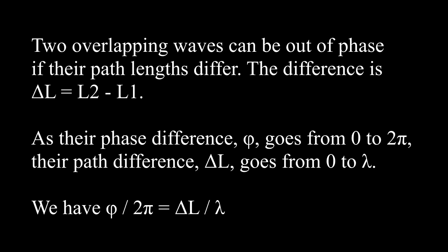Two overlapping waves can be out of phase if their path lengths differ. The difference is delta l equals l2 minus l1. As their phase difference phi goes from 0 to 2 pi, their path difference delta l goes from 0 to lambda. We have phi over 2 pi equals delta l over lambda.